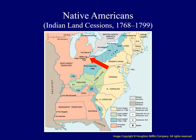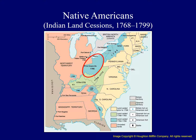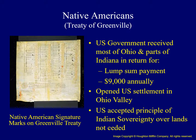Following this defeat, in 1795, the Shawnee and several other tribes of the Ohio Valley signed the Treaty of Grenville, which ceded to the United States government most of modern-day Ohio and part of Indiana. In return, the signers received a lump sum of money and an annual annuity. The Treaty of Grenville was important because it established the Americans as the dominant power in the region and opened the Ohio Valley to settlement. It was also important to Native Americans, as the United States formally accepted the principle of Indian sovereignty over all lands Native peoples had not ceded.